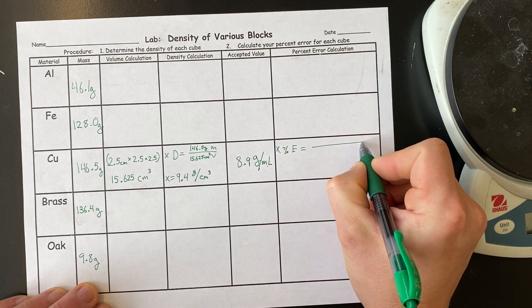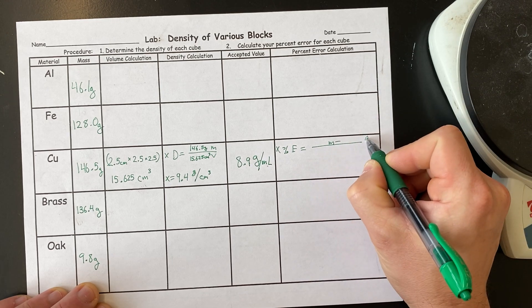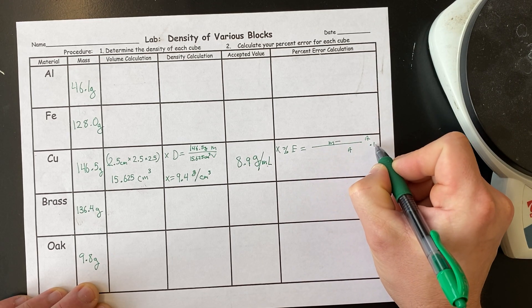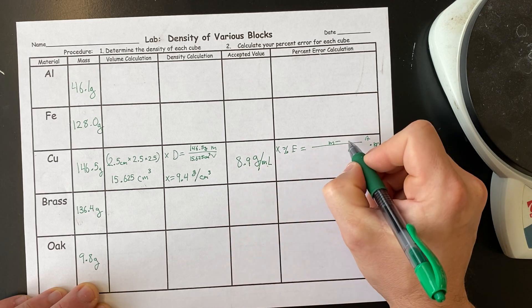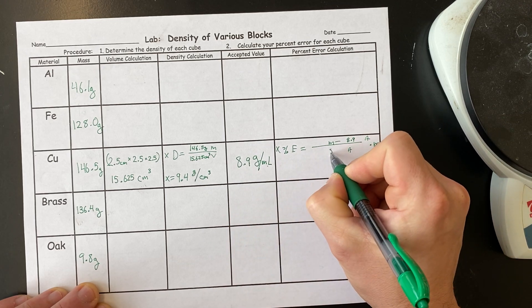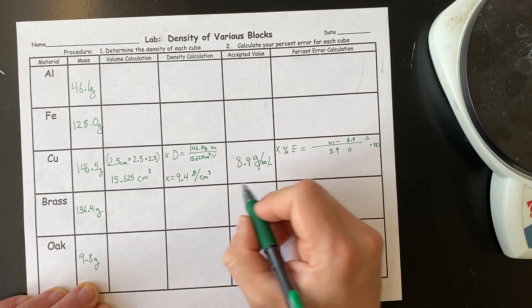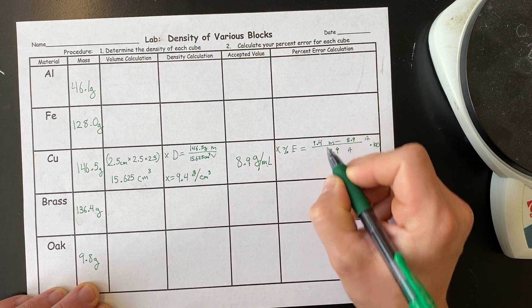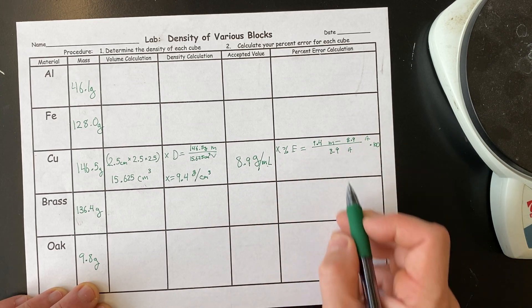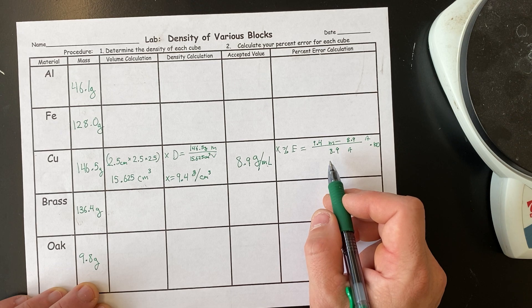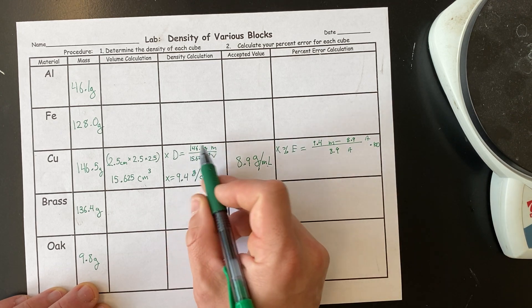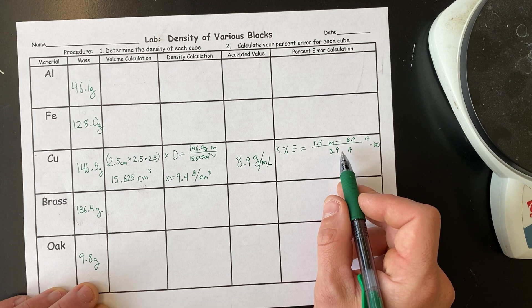That's what I want. Measure, minus accepted, over accepted, times 100. My accepted value. My measured value. Solve for my percent error. You're going to have to show all the work on a separate sheet of paper. So, this calculation can be done here, but I do want to see the work for this percent error.